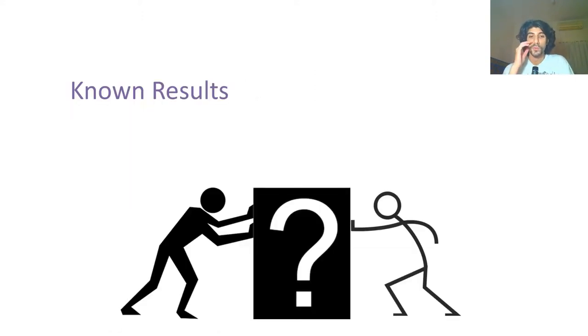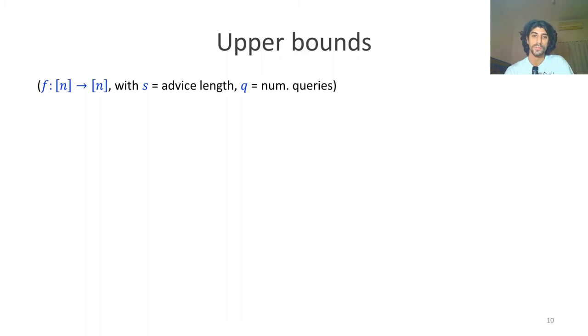Let's review what we've known all along. For upper bounds, we've got the trivial inverters. I can simply query the entire function until I find the good pre-image without using advice. Or I can keep the entire function in my advice string, then Q can be zero. I can also do a trade-off between the two - for example, keep half of the function in the advice and query the other half if needed.